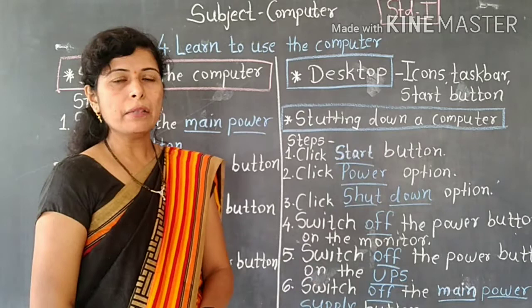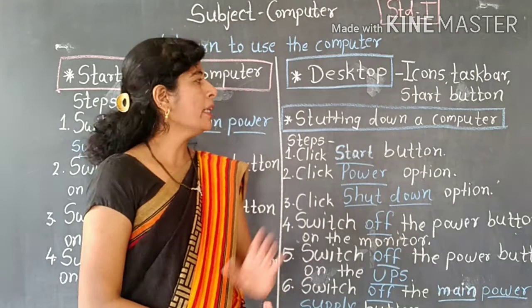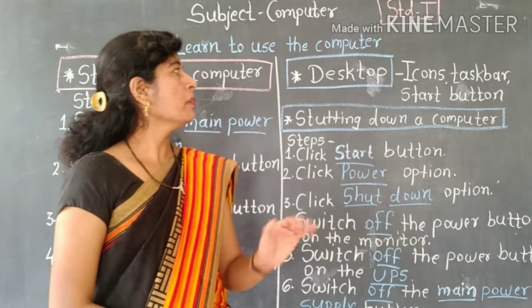On the right side of the taskbar there are other elements. The left side of the taskbar has the start button, and the right side has additional items. When you open your computer screen, you will see these elements on the desktop.